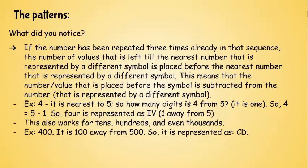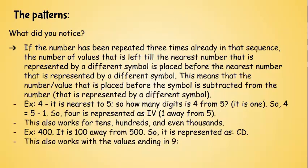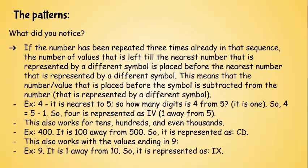So another example is 400. It is just 100 away from 500. 100 is C, and 500 is D. So it is represented as CD. This also works with the values that end in 9. Because you can only add up to 3. This works for like 4 and 9. So 9, that's the example. It is 1 away from 10. So it is represented as IX, which means that it's 1 away from 10 or like 10 minus 1.